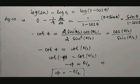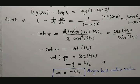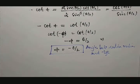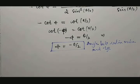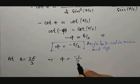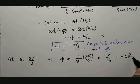This result gives us the angle ψ between the radius vector and the tangent, where ψ = −θ/2. The value of theta given is 2π/3. Therefore, at θ = 2π/3, ψ = −(1/2)(2π/3) = −π/3, which is nothing but −60°. So the angle between the radius vector and the tangent is −60°.